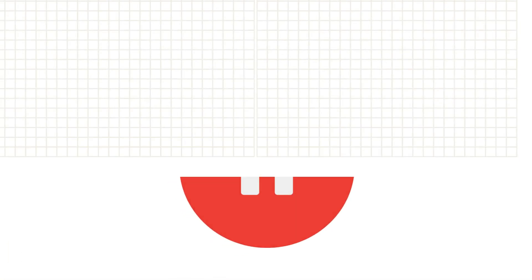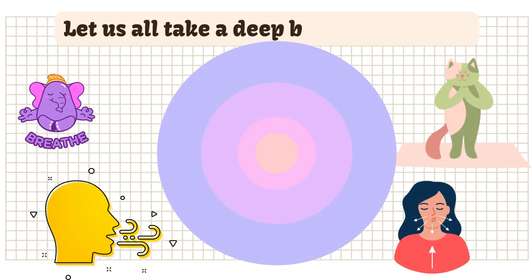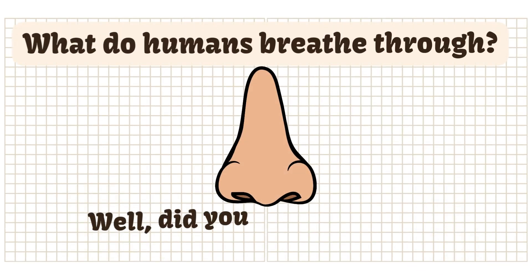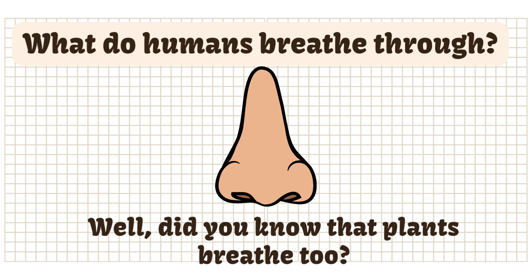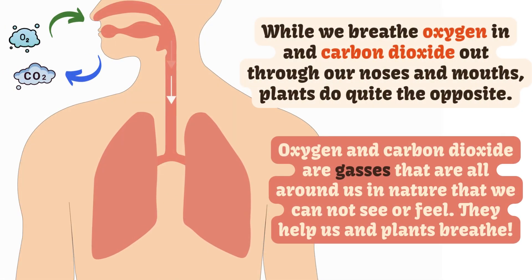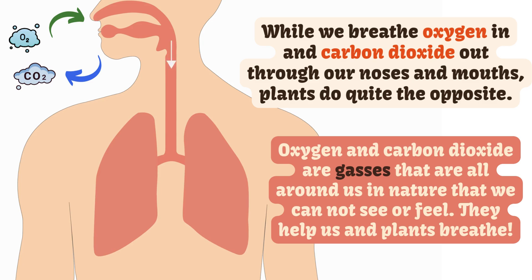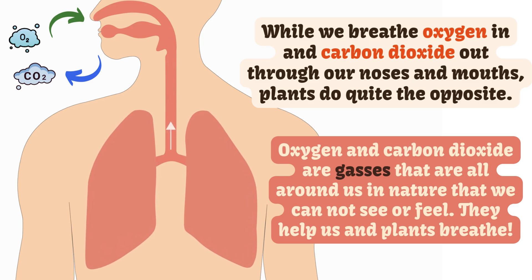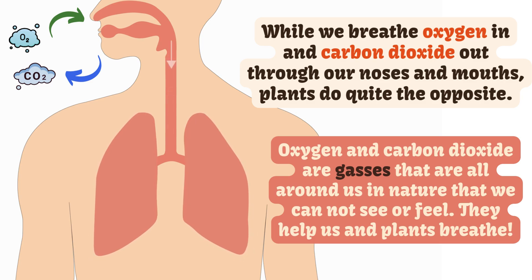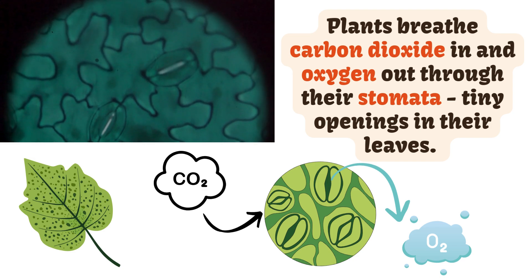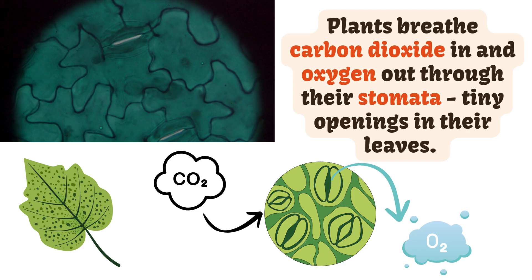Let us all take a deep breath together. What do humans breathe through? Well, did you know that plants breathe too? Humans breathe oxygen in and carbon dioxide out through our noses and mouths. Plants do quite the opposite. Oxygen and carbon dioxide are gases all around us in nature that we cannot see or feel — they help us and plants breathe. Plants breathe carbon dioxide in and oxygen out through their stomata, tiny openings in their leaves.